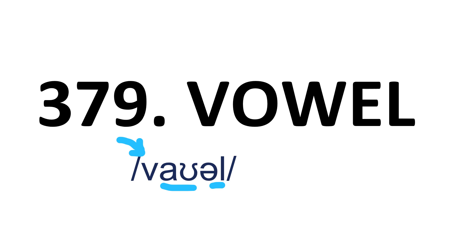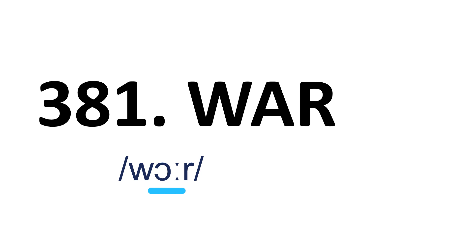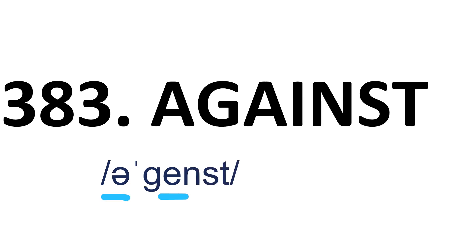Vowel — it's a two-syllable word and stress is on the first syllable. Vowel. Toward — it's a two-syllable word and stress is on the second syllable. Toward. War — it's a one-syllable word. War. Lay — it's a one-syllable word. Lay. Against — it's a two-syllable word and stress is on the second syllable. Against.